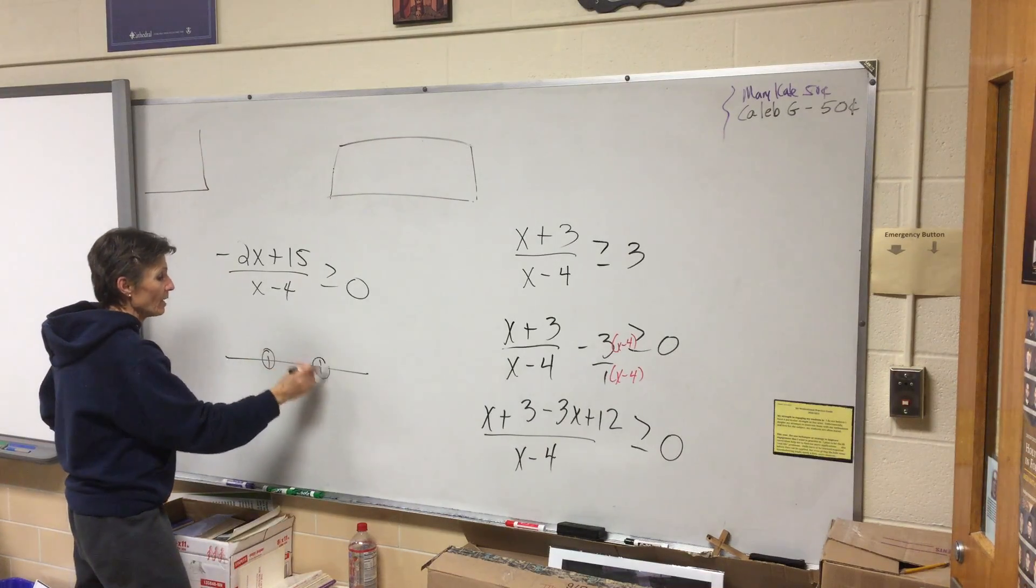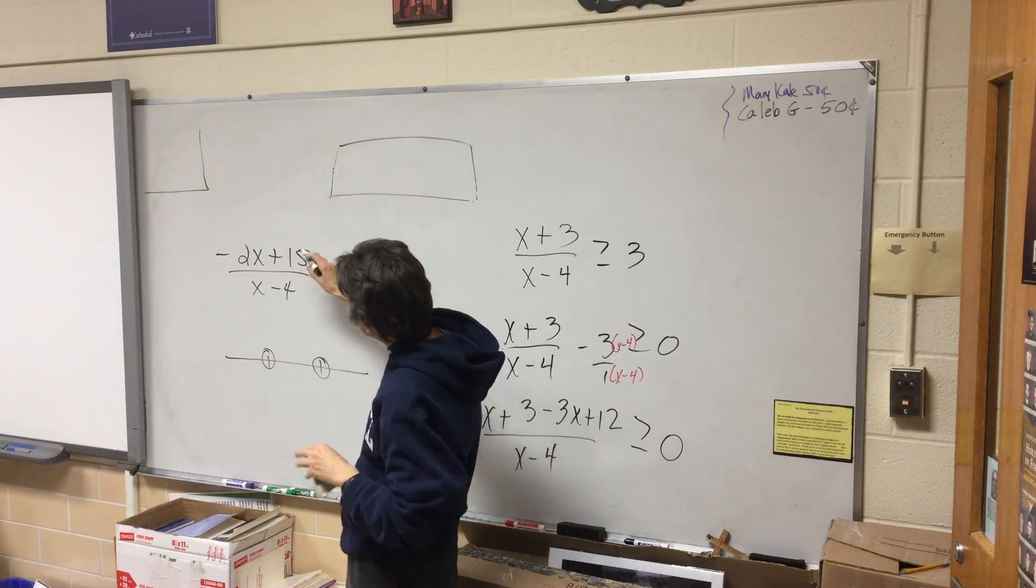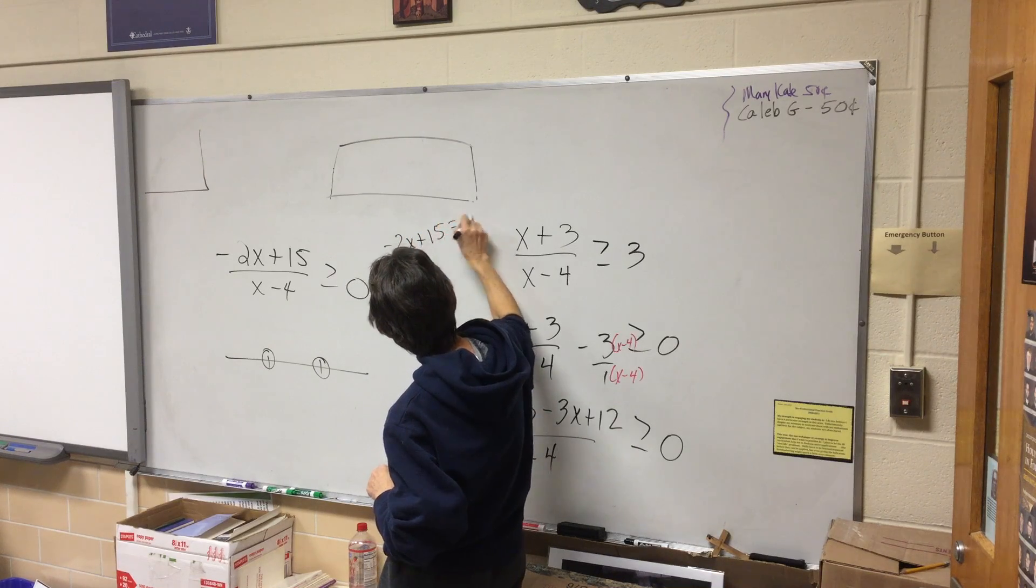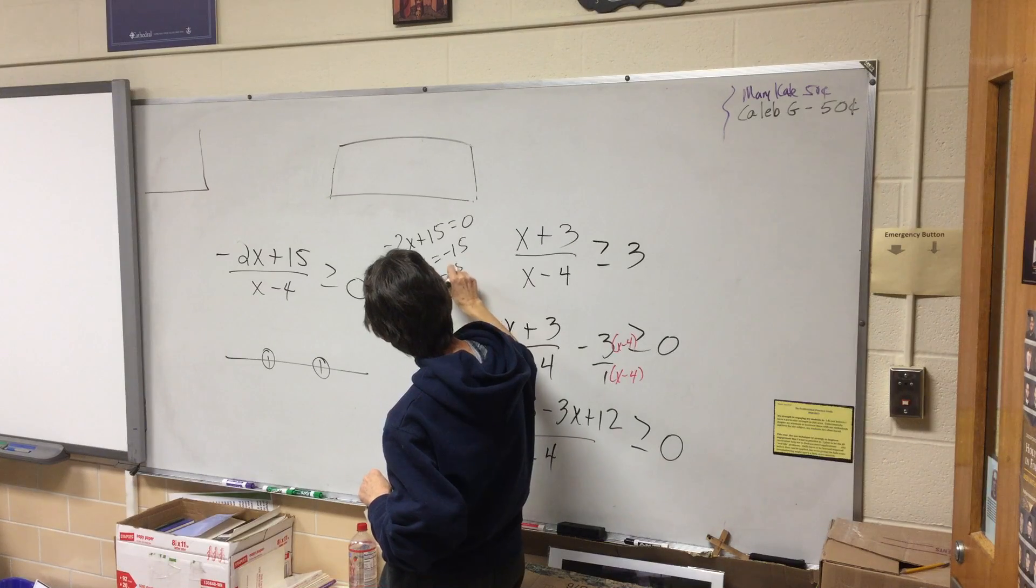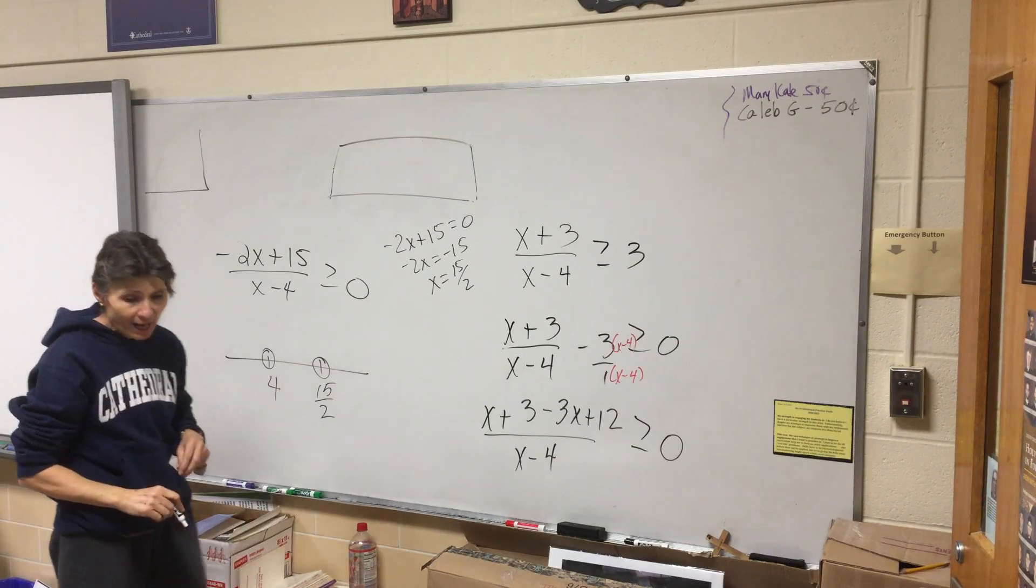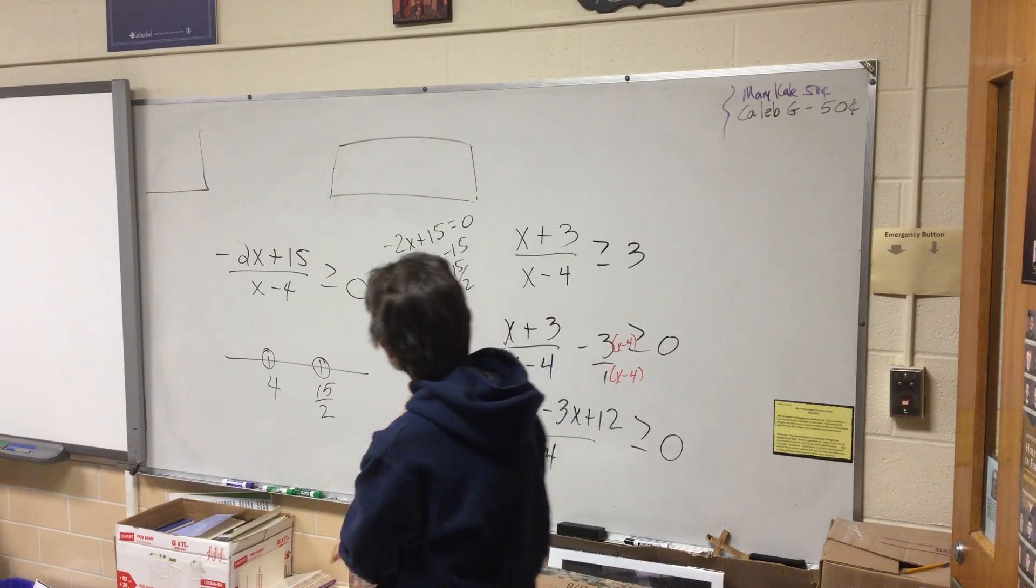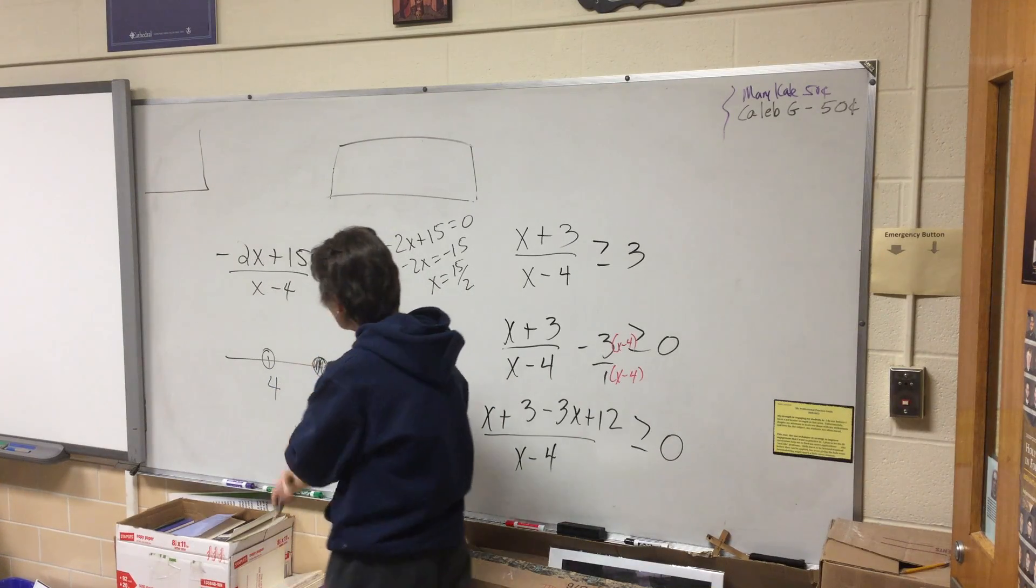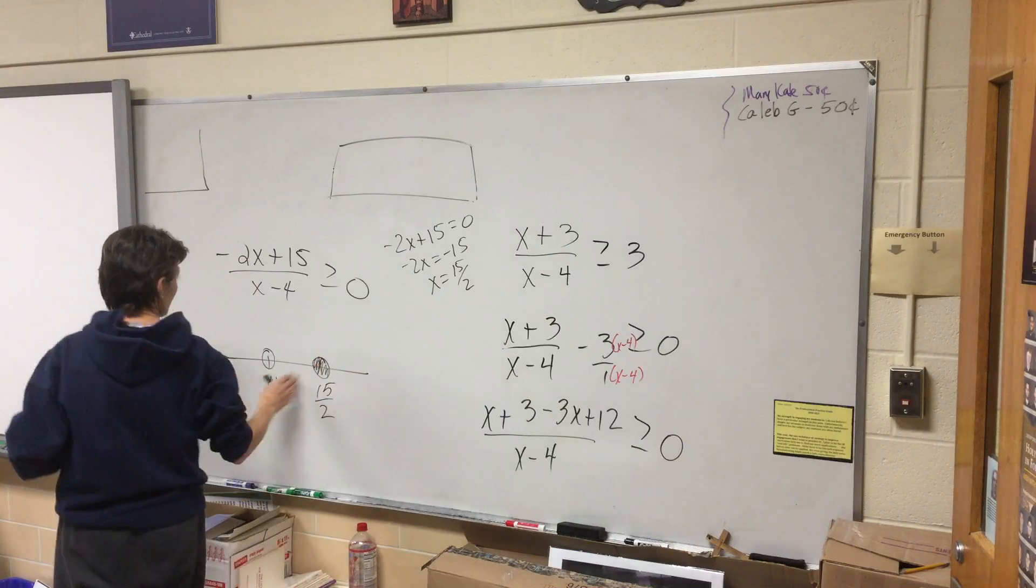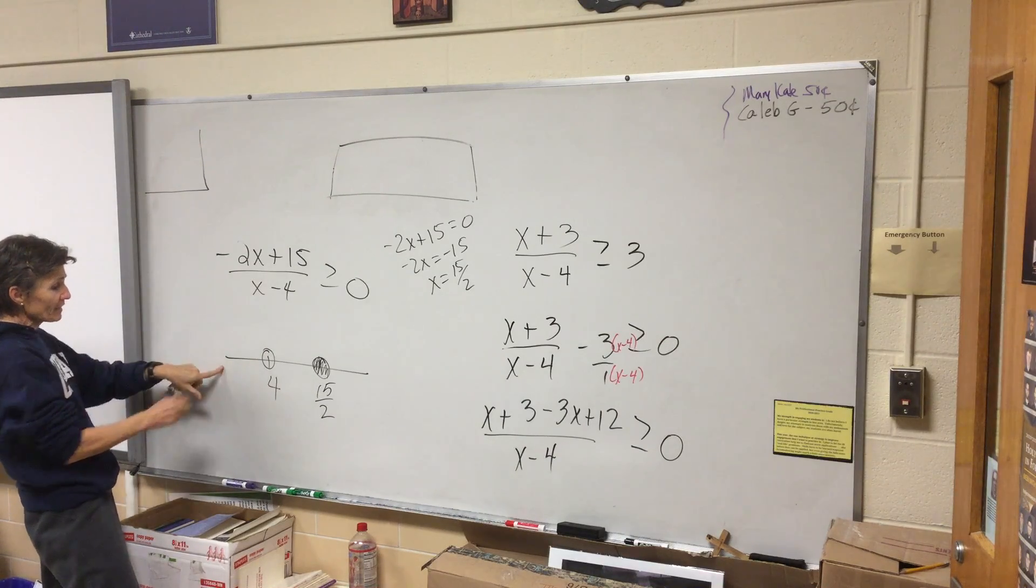So now we're ready to put the dots on the number line. I know one of them is going to be at four. But don't just guess. If you're not sure, go ahead and set it equal to zero and solve it. Is it fifteen halves? Seven and a half. So we have a dot at fifteen halves and a dot at four. It's closed at fifteen halves because of the or equal to. This can be another alternating problem.